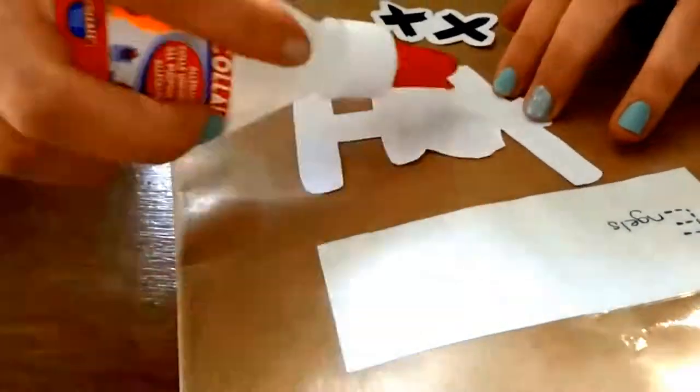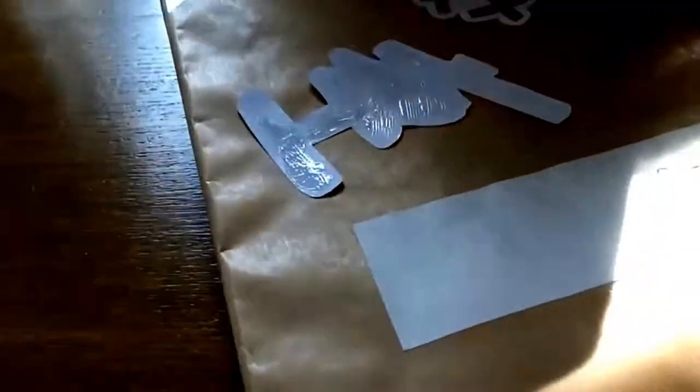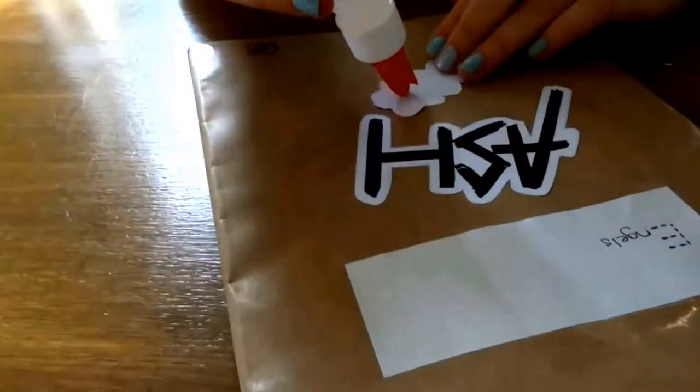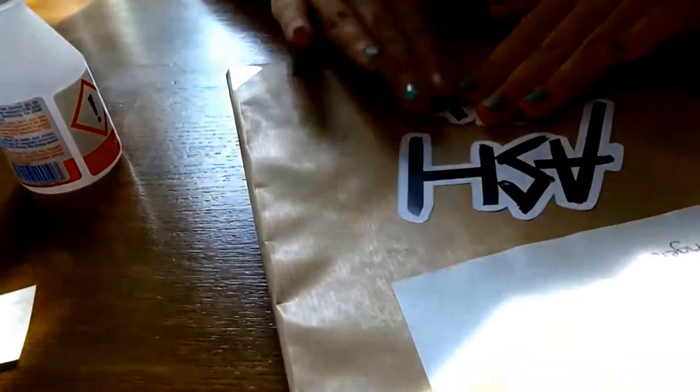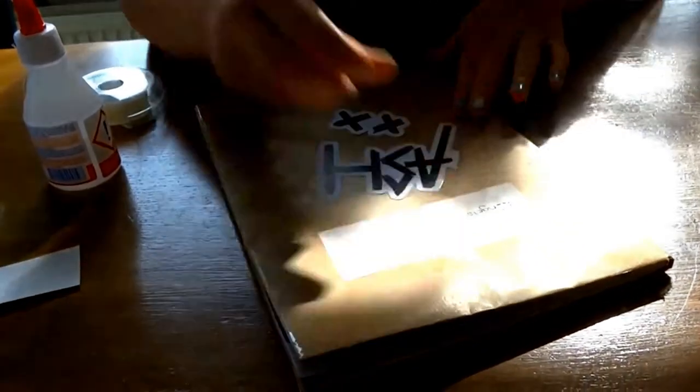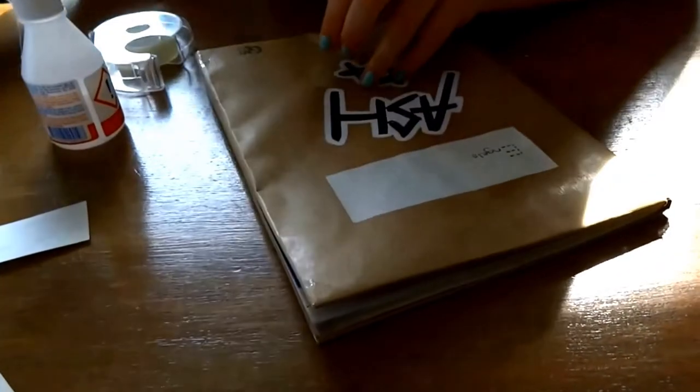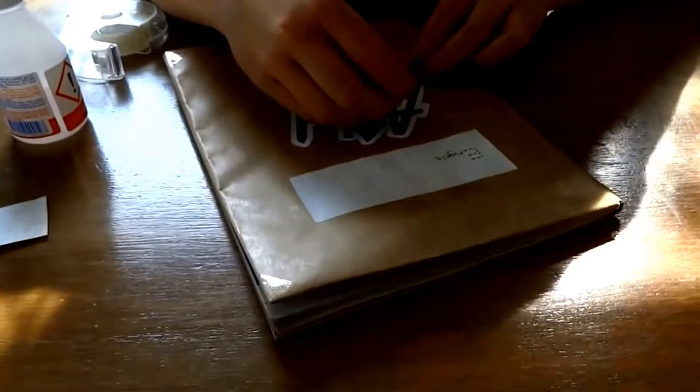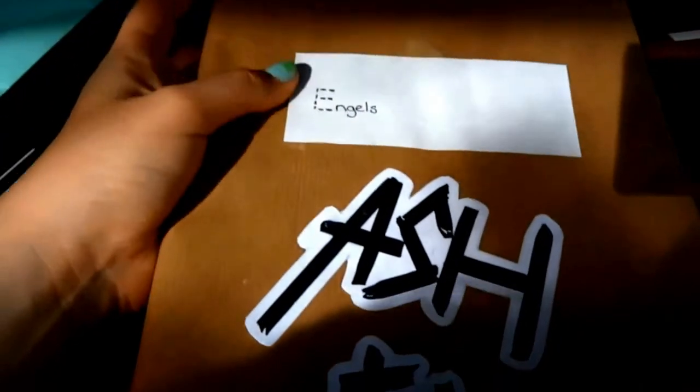After that I could add Ash's picture and now I'm putting it on the book with some glue. After that I put tape on it to make sure it's protected and it will stay in the book for the whole year. So this is how it turned out.